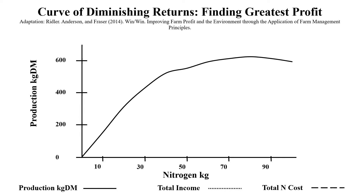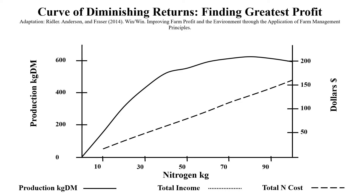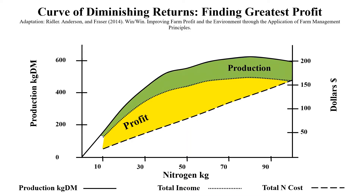This is the production for the nitrogen being used, this is the cost of that nitrogen, this is the income that's being produced by the nitrogen, and of course if we minus the cost we get the profit. And if we color in the production, we can see where production is being maximized the profit is actually declining — mainly because of rising costs.